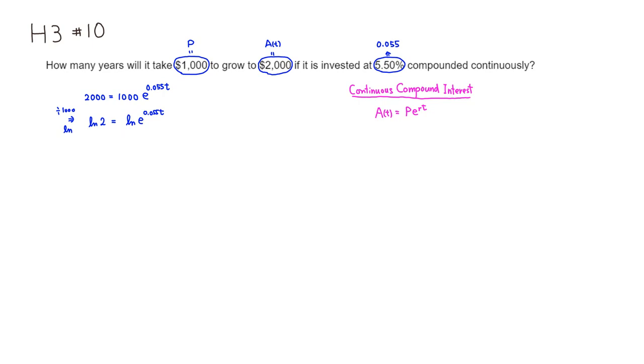We can use an inverse property. When you compose log function and exponential function of the same base, they basically cancel out each other. So we have 0.055t.